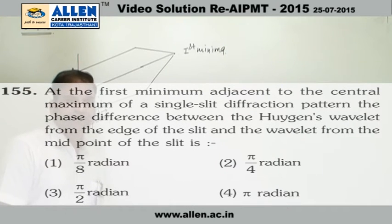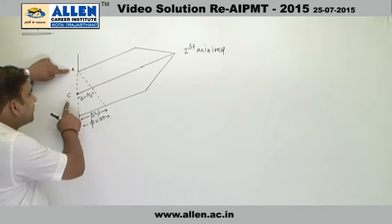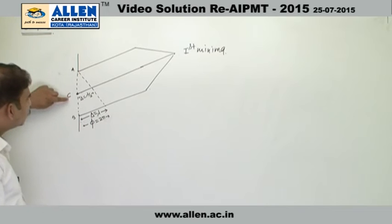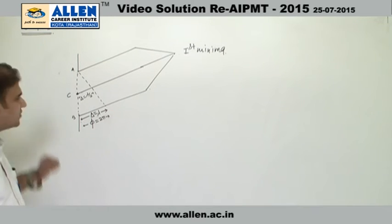Question number 155. In this question, we have to calculate phase difference between these two wavelets, Huygen wavelets coming from A and C.